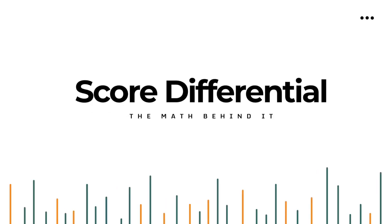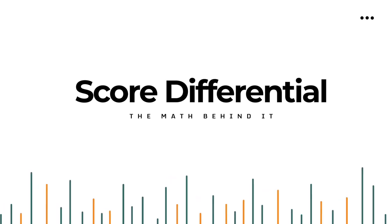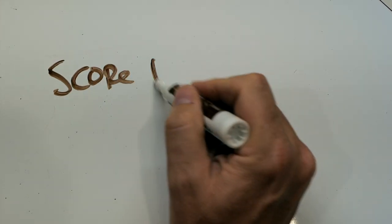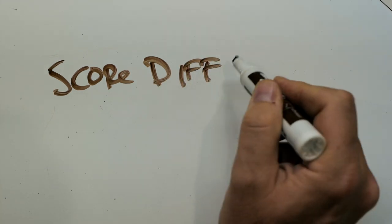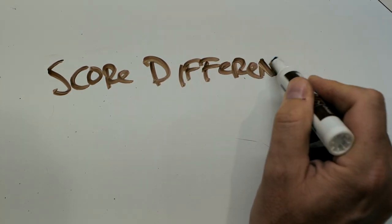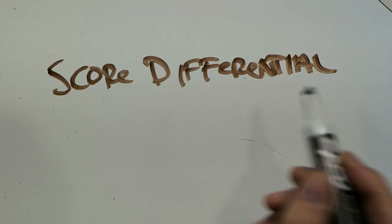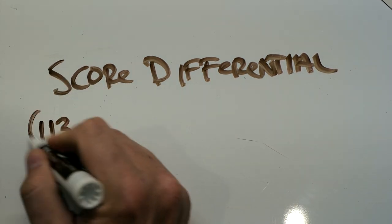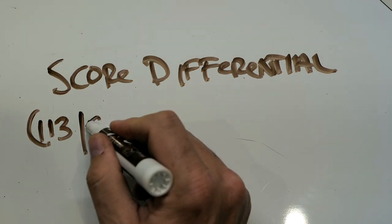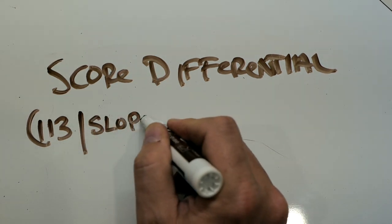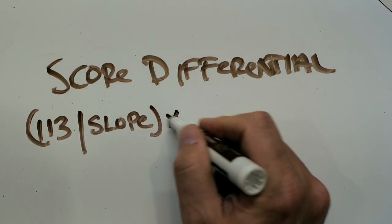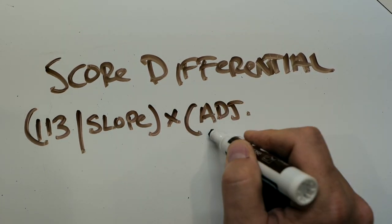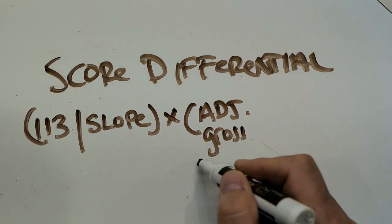The main ingredient to creating a handicap index is called a score differential. This is basically what you shoot on any given day, but in a really confusing way. A score differential is calculated by this equation: 113 divided by the slope — and I'm going to tell you what slope means in just a second — then that's all multiplied by your adjusted gross score.